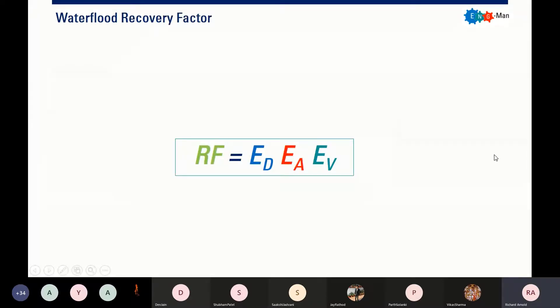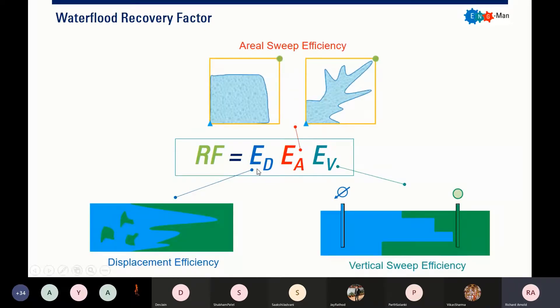One of the things that is very important regarding water flood is how we calculate the recovery factor. The recovery factor can be calculated using this formula. It is the displacement efficiency multiplied by aerial sweep efficiency and by vertical sweep efficiency. This is how we calculate the recovery factor provided by the water flood or the water injection.